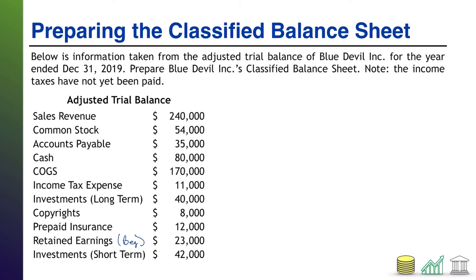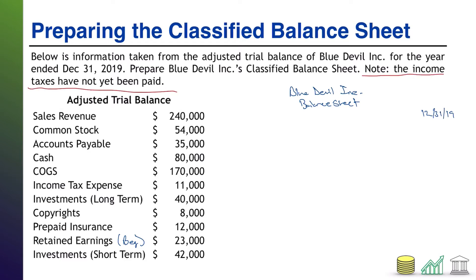Anytime I have problems of this nature where I'm given a big list of information, I like to do a little housekeeping before I really get underway. First, I'm preparing a financial statement — all financial statements get a header. Blue Devil Inc., then the statement name: Balance Sheet. No need to say it is a classified balance sheet; that's going to be evident from the formatting. This is a balance sheet at a point in time: December 31, 2019. We need to identify where these pieces go, and we've got to make sure we incorporate that note about income taxes.